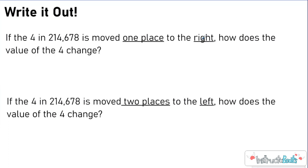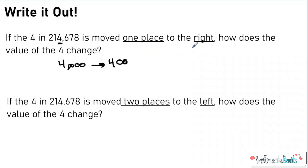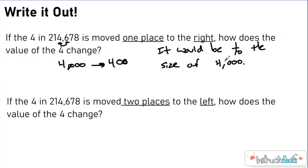Hopefully you just paused it. It says if the four in 214,000 is moved one place to the right — right now it is worth 4,000, and if you move it one place to the right it'd be in the hundreds spot, so it would be worth 400. How does the value of four change? It changes from 4,000 to 400. Because you're moving one place value to the right and going to a smaller place value, it is one-tenth the size of 4,000. Each time you move a place value to the right, you are getting smaller by one-tenth.